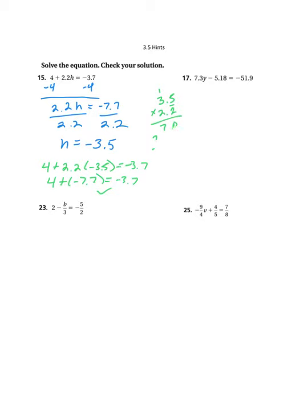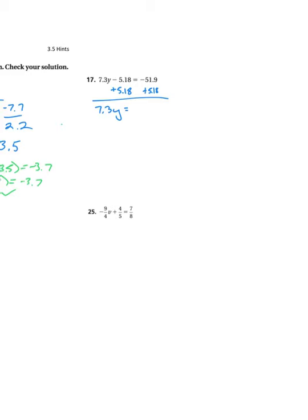Erase this and give myself a little bit more space. And this next one, I've got another decimal problem to solve. I'm going to start by adding 5.18 to both sides, and I get 7.3y equals. I'm going to give myself a little bit of space to work here. Let's see, I'm adding a negative plus a positive,